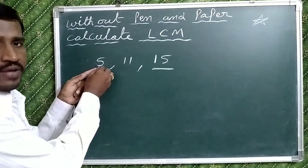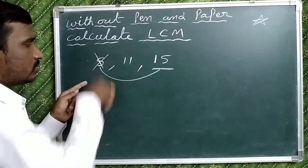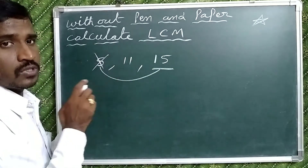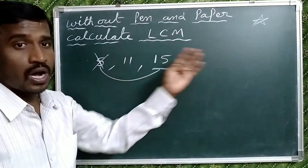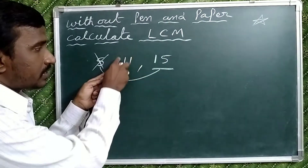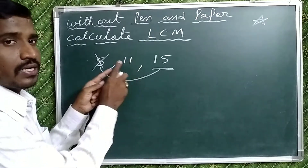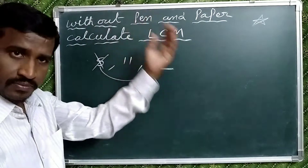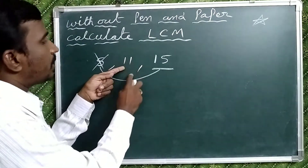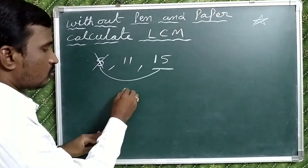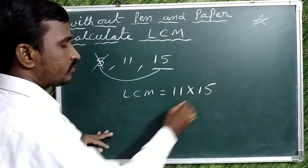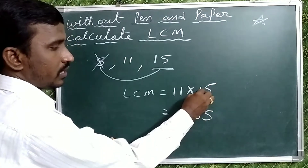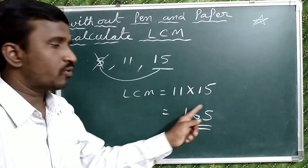Now observe a different model with the numbers 5, 11, and 15. Select the highest number — here 15 is the highest. Check: 5 is a factor of 15, so take that out. Now check 11 — 11 is not a factor of 15. Here, there is no need to write the next multiple of the highest number, because 11 is a prime number. When one of the given numbers is a prime number, then multiply this prime number with the highest number. So the LCM will be 11 into 15, which equals 165.